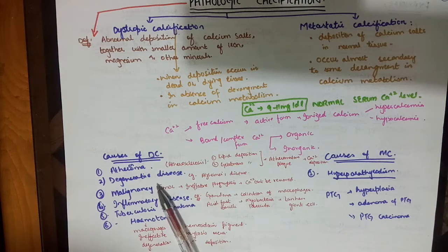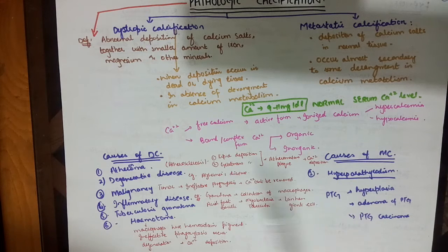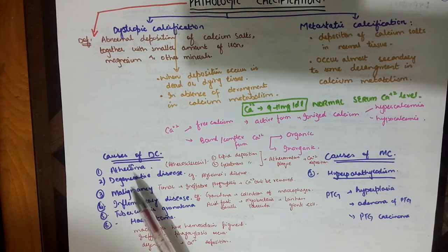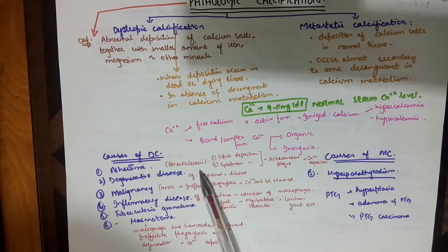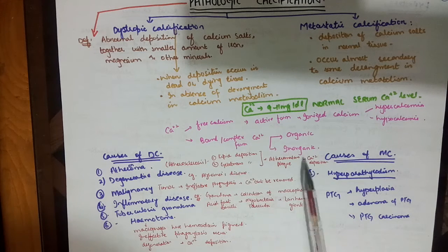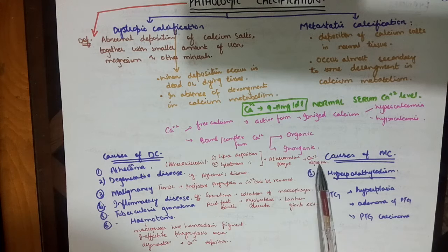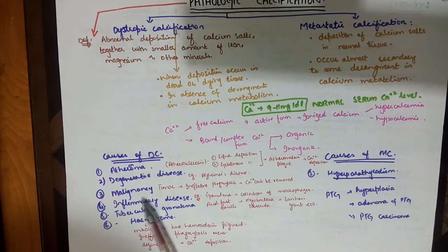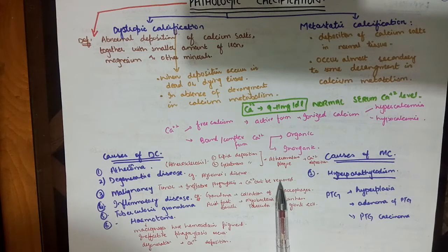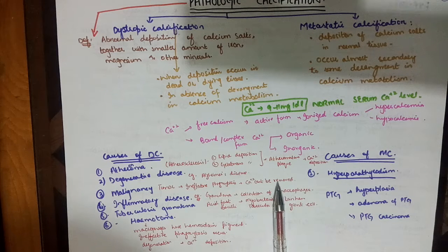The causes of dystrophic calcification include: first, atheroma — for example in atherosclerosis, there is lipid and gelatinous deposition ultimately leading to an atheromatous block with calcium deposition. Second, degenerative disease. Third, malignancy — in the case of a tumor, there is ineffective phagocytosis so calcium cannot be removed from the cell, leading to excessive intracellular calcium accumulation and dystrophic calcification.